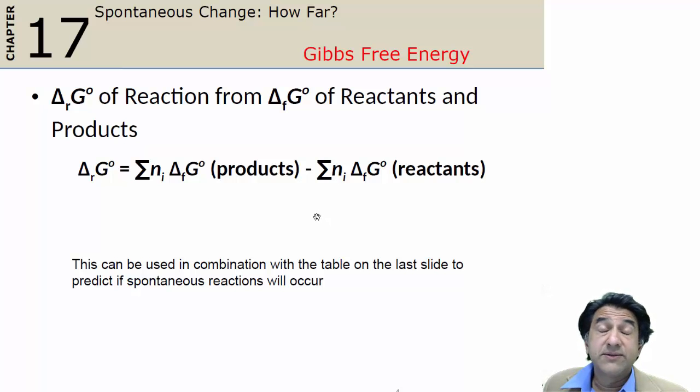You do it in just the same way as you calculate delta H for a chemical reaction. Calculate the delta G of formation for all the products multiplied by their stoichiometric coefficients, and subtract the corresponding delta G for all the reactants, delta G of formation for the reactants times their stoichiometric coefficients.